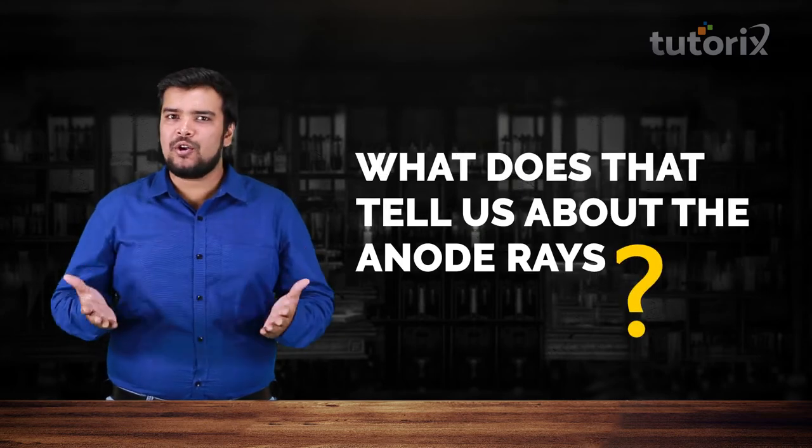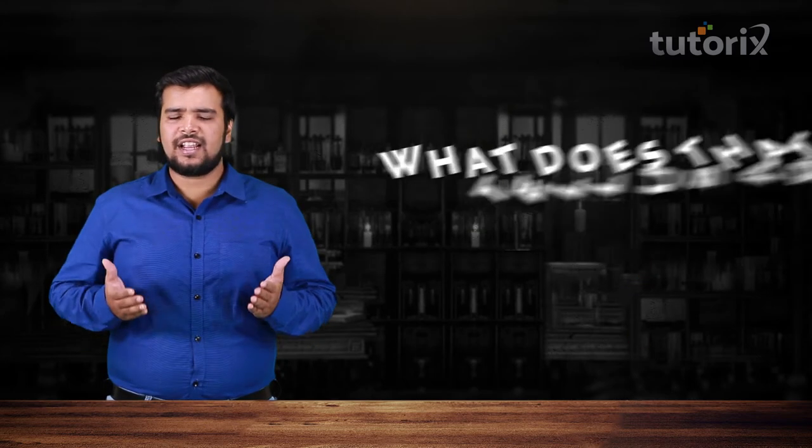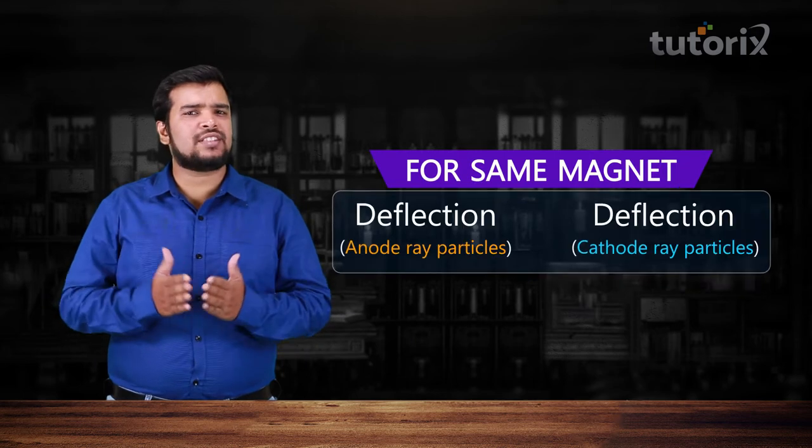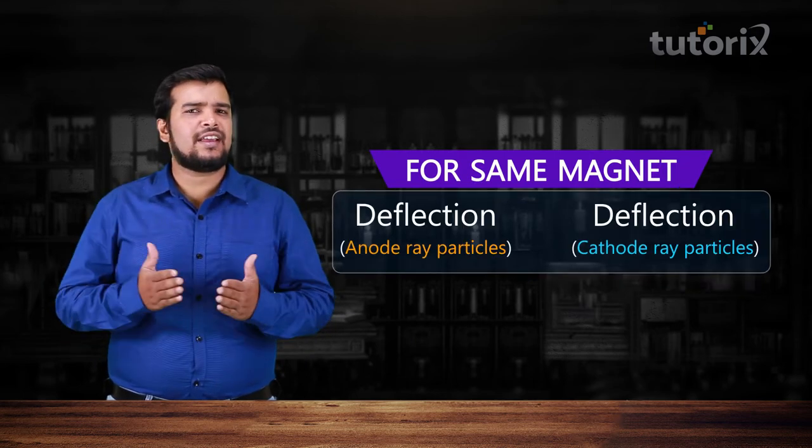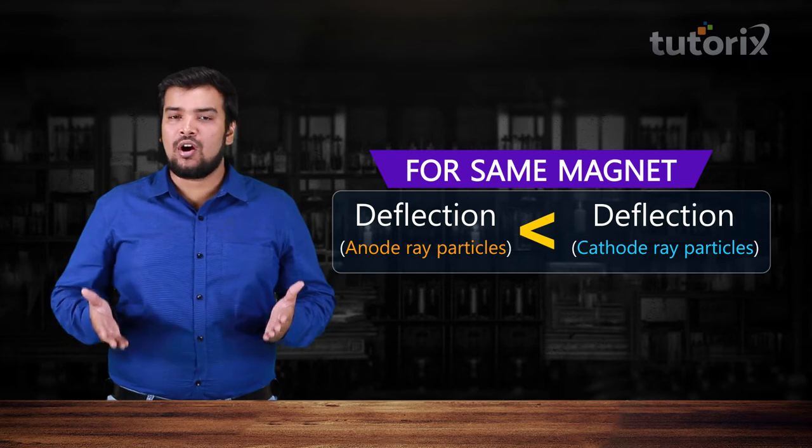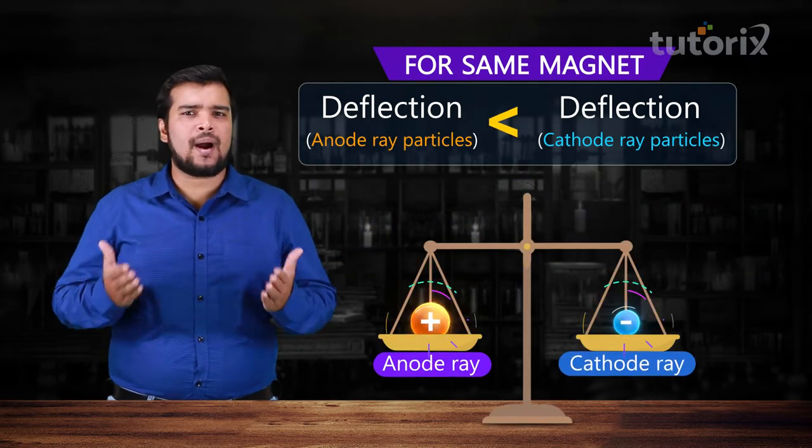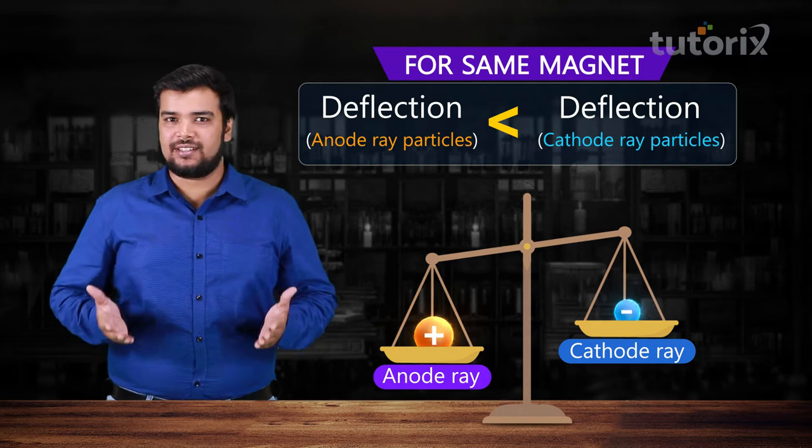So what does that tell us about anode rays? That tells us that even though we are using a magnet of the same strength in both cases, the deflection in the case of anode rays is less because anode rays must be made of particles which are heavier than the particles in the cathode rays.